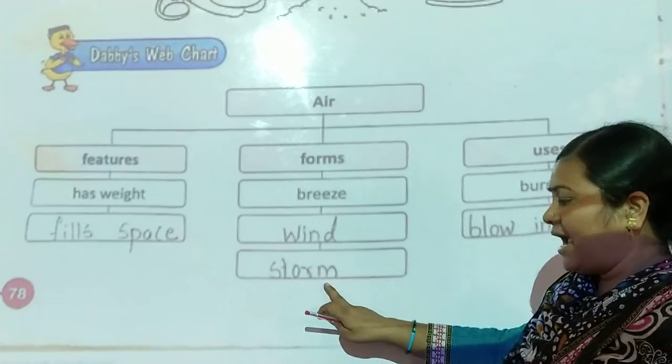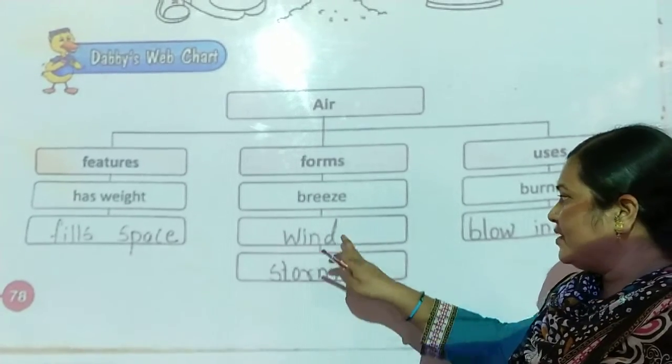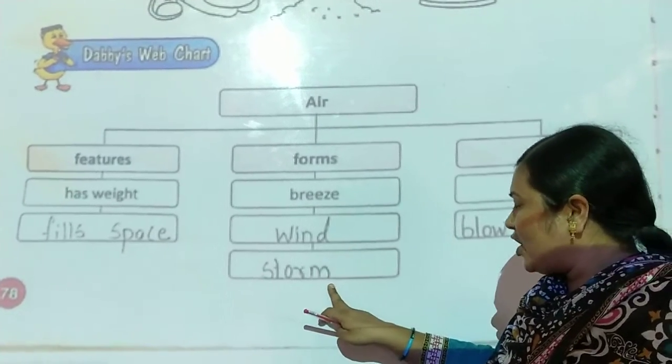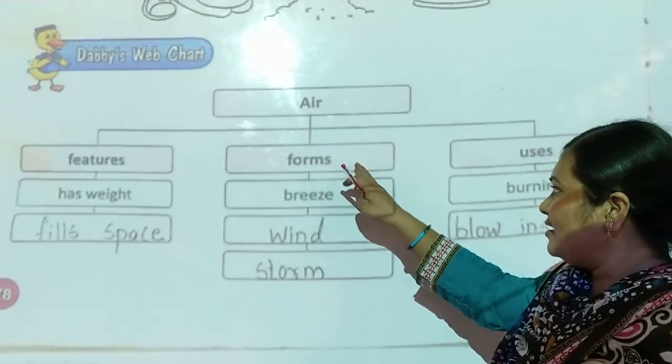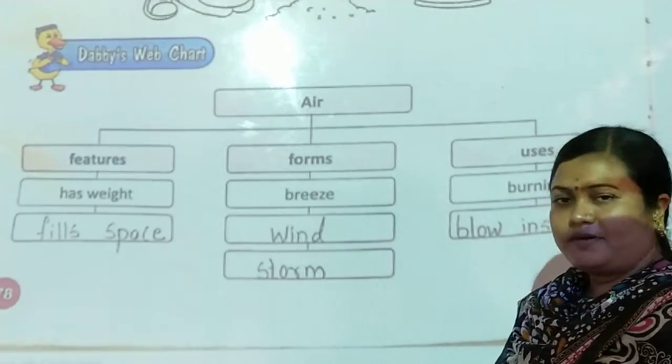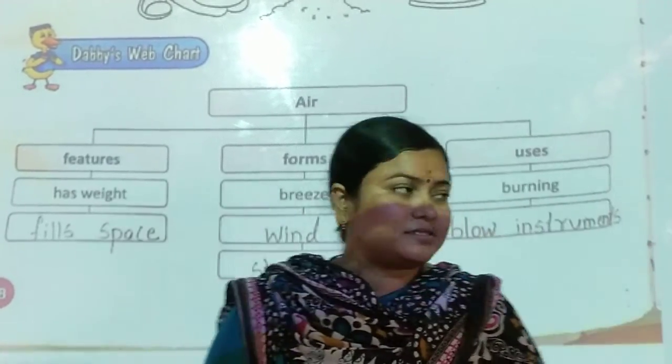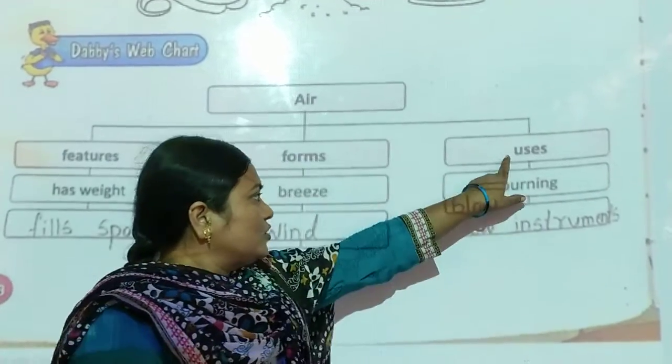The forms of air are breeze, wind, and storm. Breeze, wind, and storm are the forms of air.